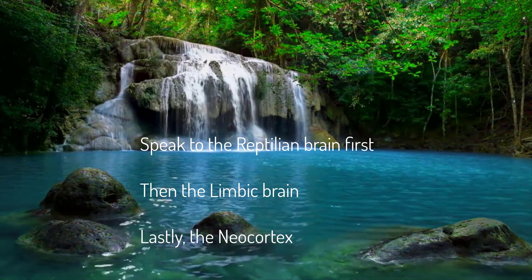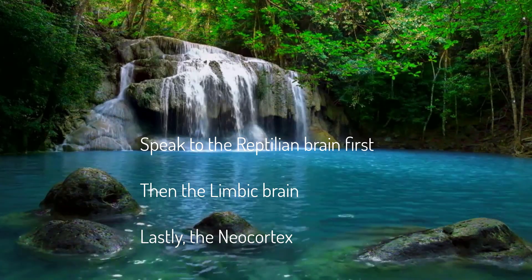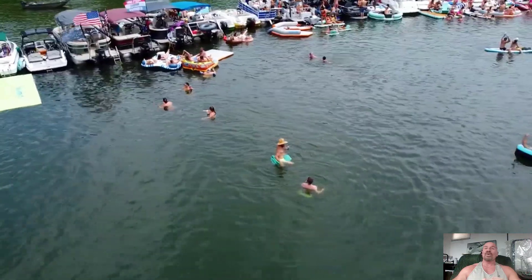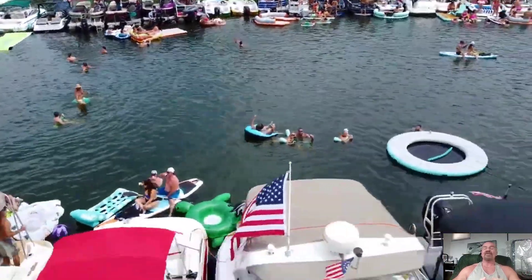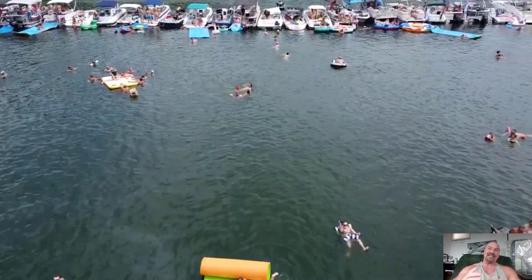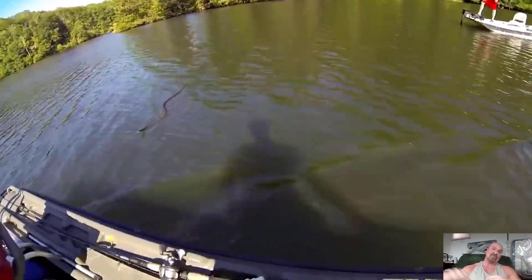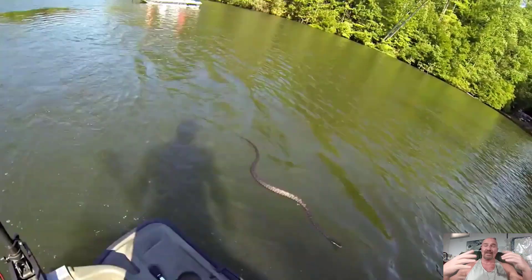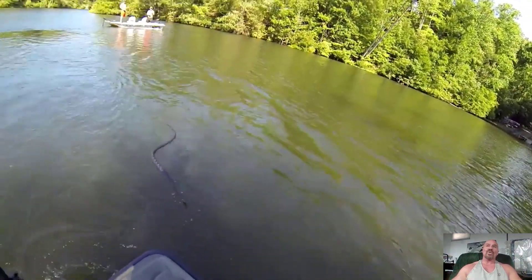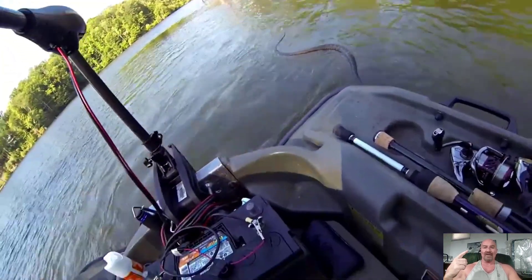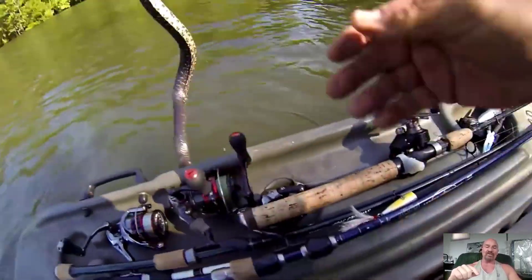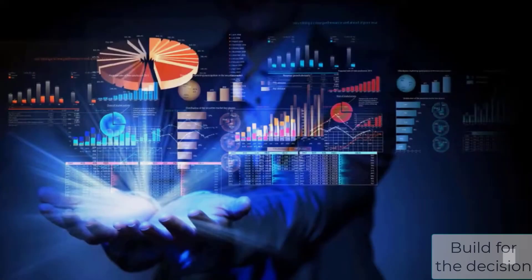This brain can make survival decisions before the other brains can even begin to process data. I know this firsthand: I was out at the lake floating on a raft talking with friends and family when I felt something brush my leg. Before I could look, I had reached down, grabbed, and thrown a four-foot water snake at least 30 feet across the water — before my neocortex could even register there was a snake on my lap. That's the reptilian brain, and that's what we try to speak to in our marketing.